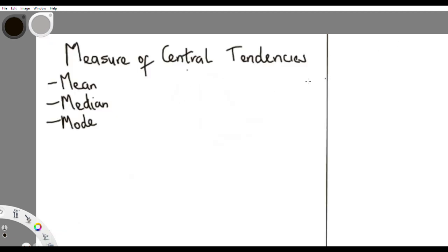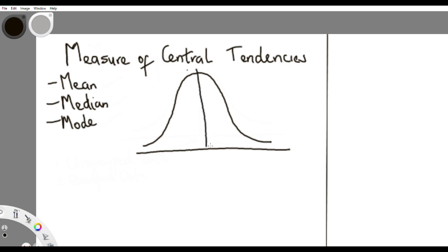In a distribution, you tend to have values that lie at the center — this is a normal distribution. Most values fall at the center of the distribution. If you take samples from a particular population, or even the whole population, the majority of values tend to fall at the center of the distribution.